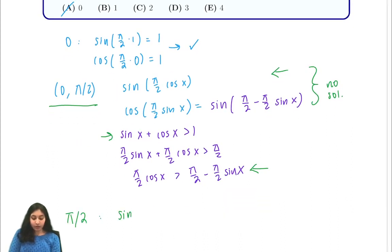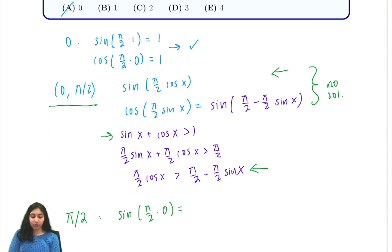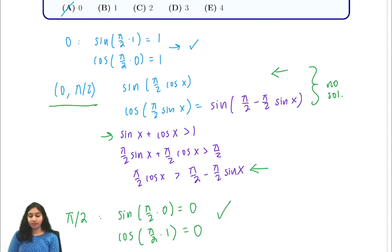Now let's check x = π/2. We get sine of (π/2 · cos(π/2)) = sine of (π/2 · 0) = sine(0) = 0. For the right-hand side, cosine of (π/2 · sin(π/2)) = cosine of (π/2 · 1) = cosine(π/2) = 0. So we have found another solution — so far we have two solutions.